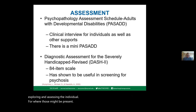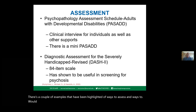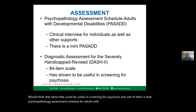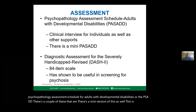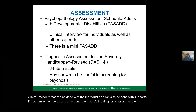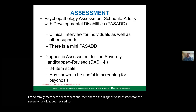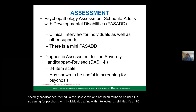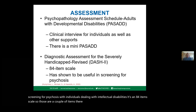There are a couple of highlighted tools useful in screening for psychosis. One is the Psychopathology Assessment Schedule for Adults with Developmental Disabilities, or the PASADD — a clinical interview that can be done with the individual or with supports such as family members. There is also a mini version. The other is the Diagnostic Assessment for the Severely Handicapped Revised, or DASH-2, an 84-item scale found useful for screening psychosis in individuals with intellectual disabilities.